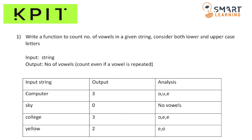This is the question they asked — look at the question. They have given input string, output, and analysis. They have also given some constraints: we have to consider both uppercase and lowercase letters in the input string, and even if the vowels are repeated we have to count those vowels also. The first input is a string — we have to pass one string as input for the function, after which the function will return the vowel count.